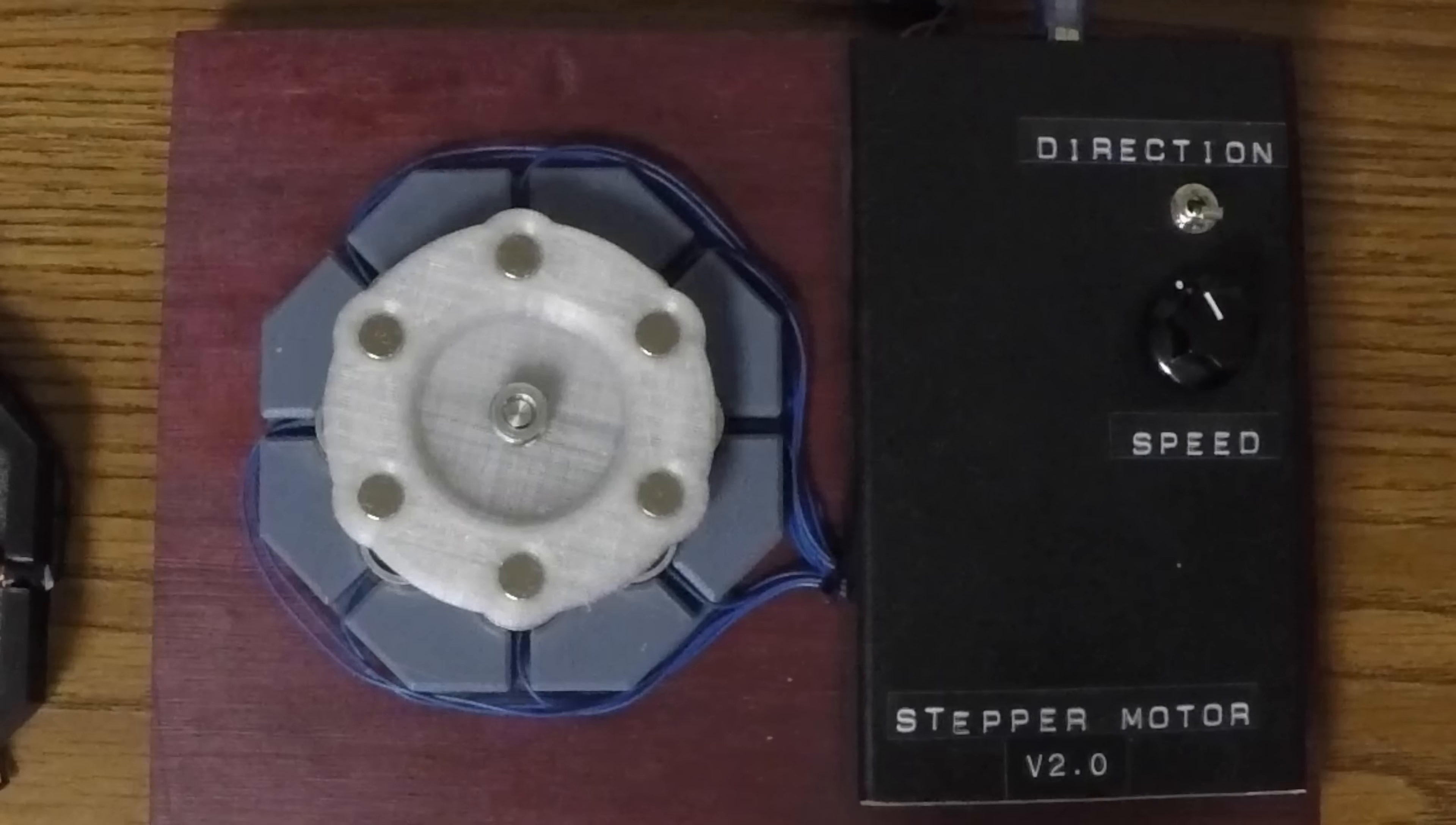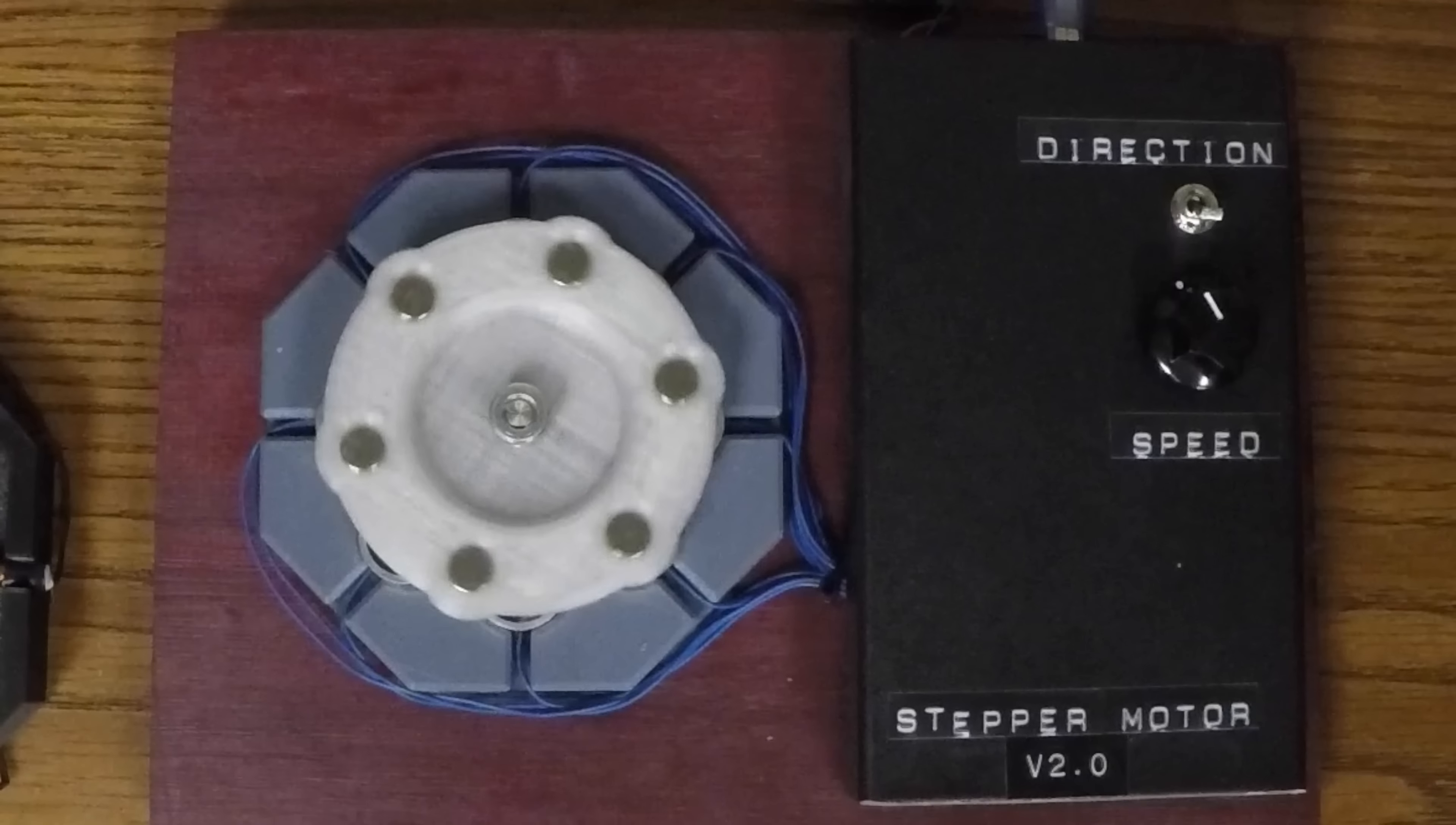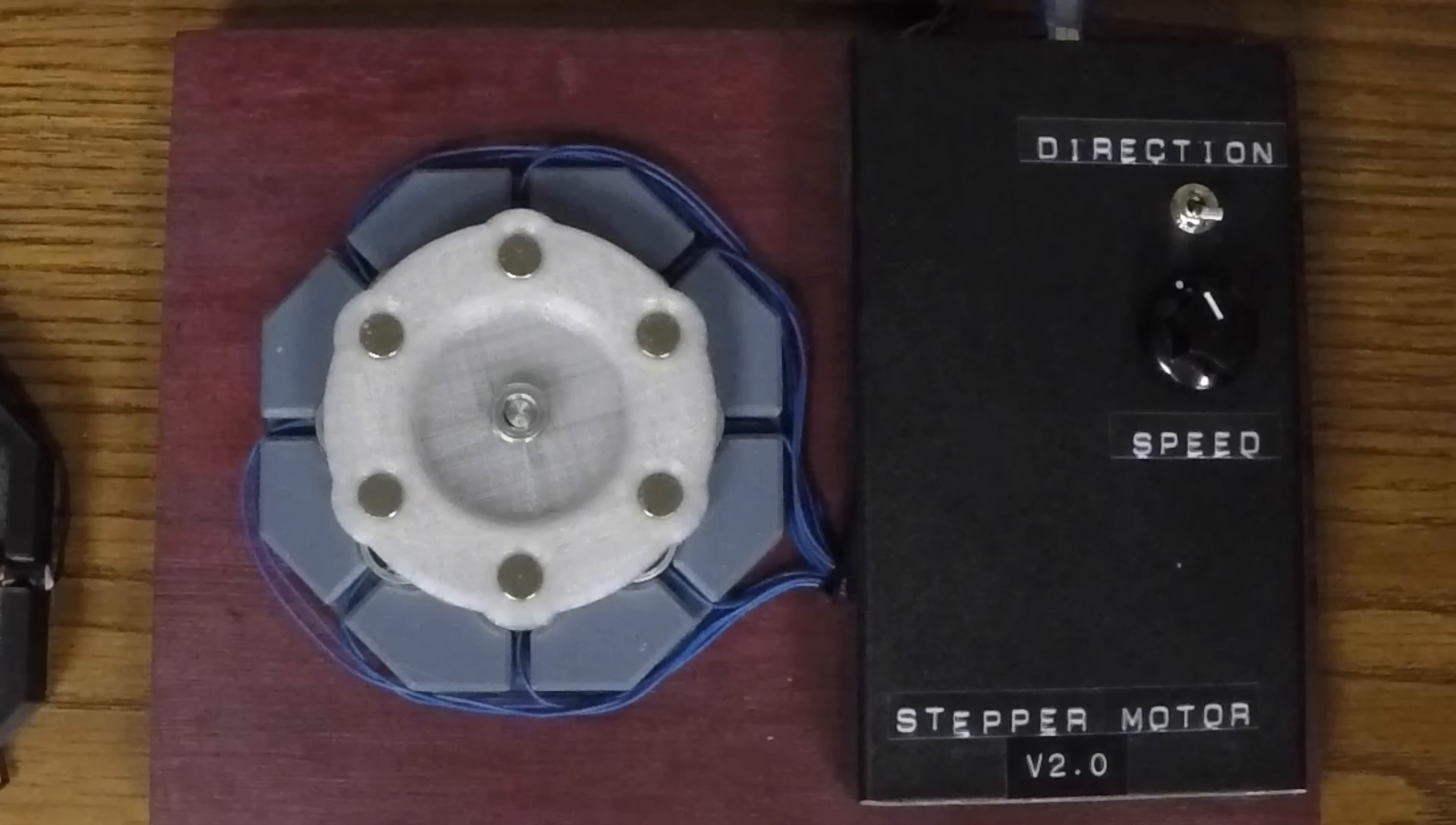Hey guys, so this is my axial flux stepper motor. It's called an axial flux motor because the magnetic field lines are oriented in the direction of the axis of rotation, unlike a regular stepper motor where the magnetic field lines are oriented radially towards the center.